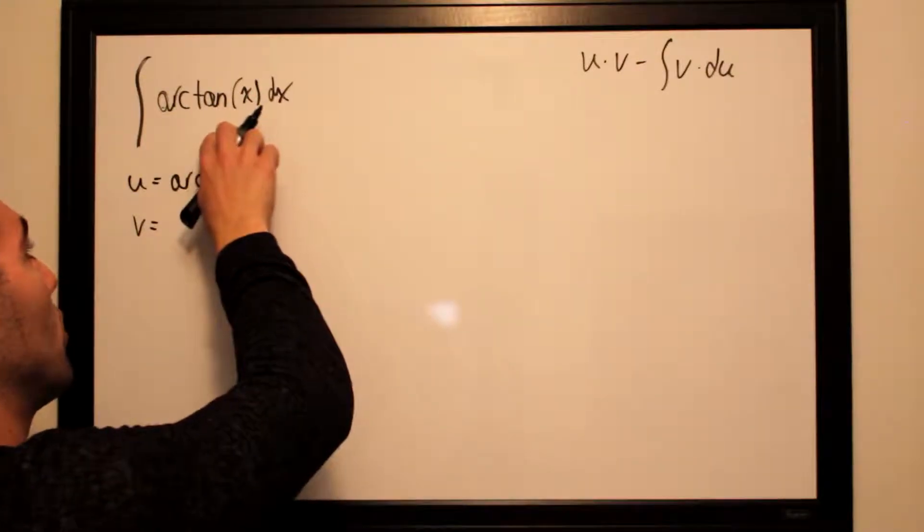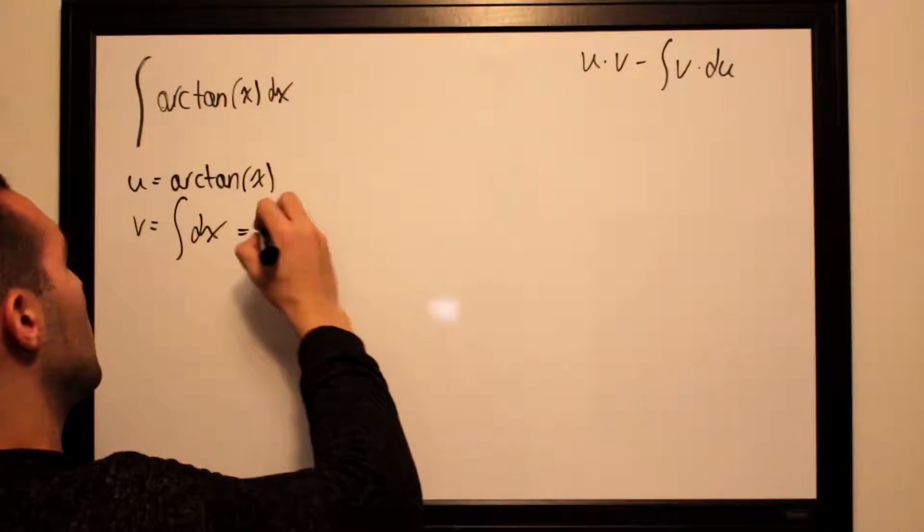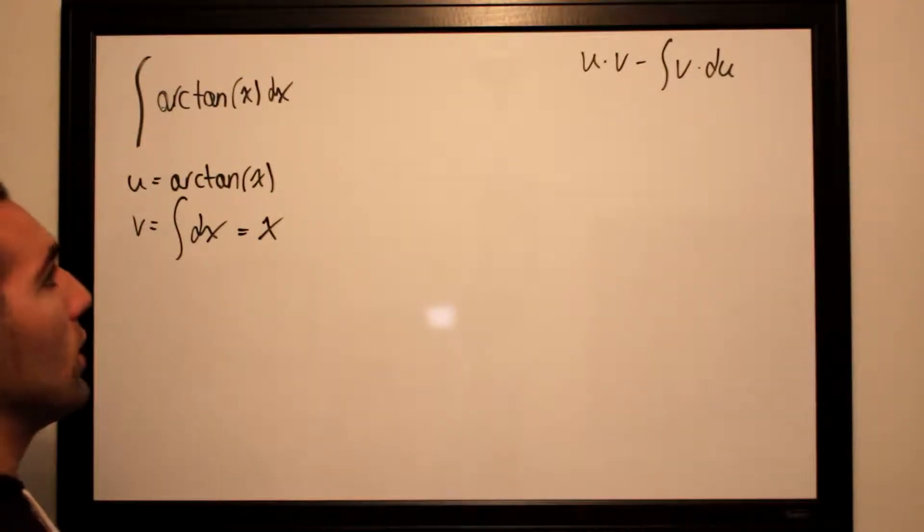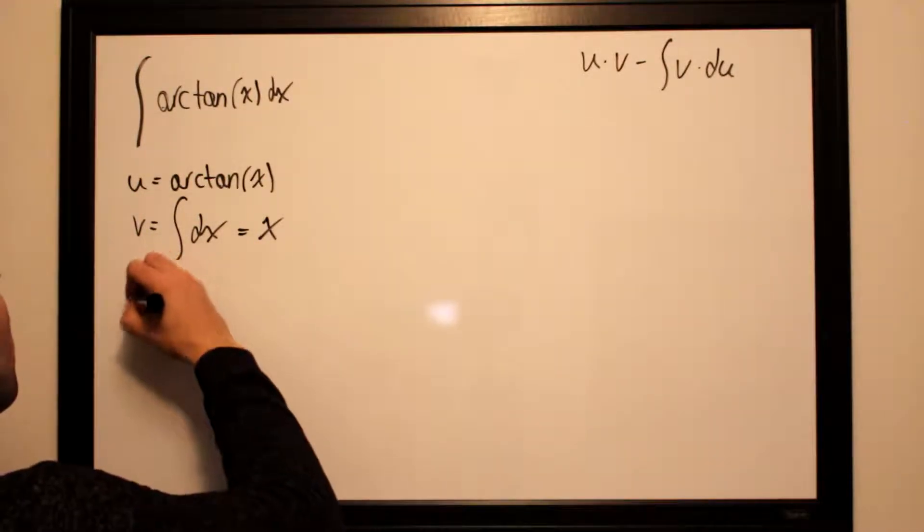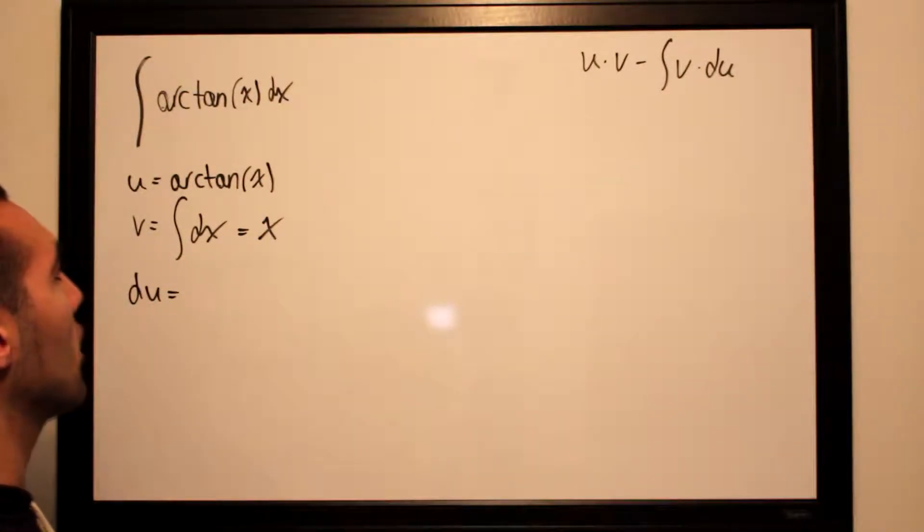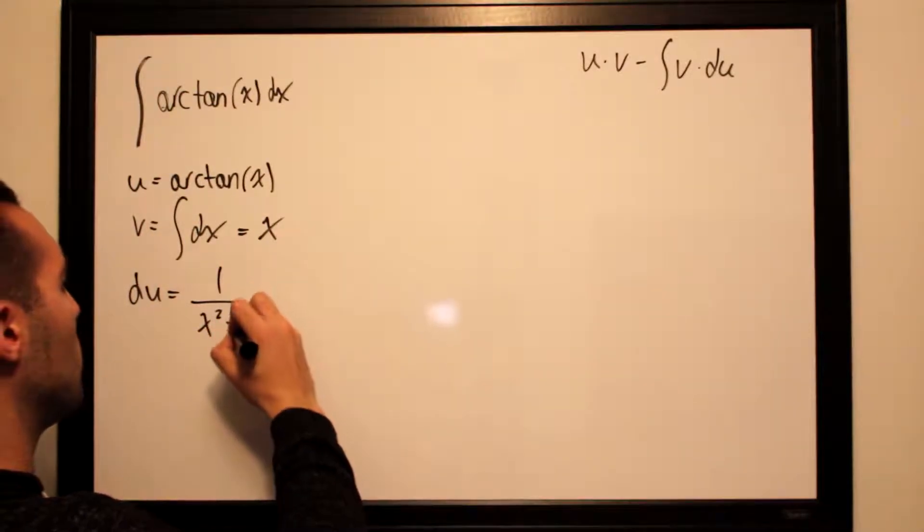If we cover up arctan x all we'd have is the integral of dx and that equals x. Now all we need is the derivative of our u which is du, and the derivative of arctan x is 1 over x squared plus 1.